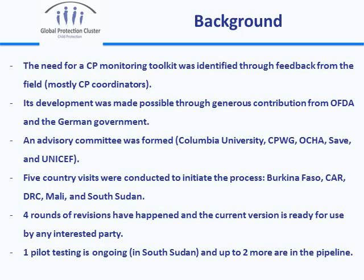The beginning of the process was designed to involve country visits to get a sense of what countries need in terms of monitoring the response and the situation of children. This happened in 2014 and 2015. Five countries were visited: Burkina Faso, Central African Republic, Democratic Republic of Congo, Mali, and South Sudan. During these visits, workshops were held with stakeholders, NGOs, and UN donors to get a realistic sense of the monitoring activities and the needs of those actually programming and managing programs.